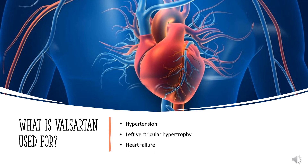What is Valsartan used for? Valsartan is indicated for the treatment of hypertension to reduce the risk of fatal and non-fatal cardiovascular events, primarily strokes and myocardial infarctions. It is also indicated for the treatment of heart failure, NYHA class 2–4, and for left ventricular dysfunction or failure after myocardial infarction when the use of an ACE inhibitor is not appropriate. It is also used in combination with Sacubitril.